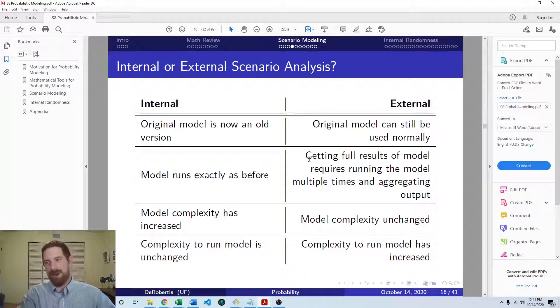Whereas you go with the internal, then what you have before is now an old version of the model. Now you have this new version which has the scenario analysis baked in. And now those two things are inherently entwined and anything else you do with the model is going to be running that scenario analysis as well. And then next is an advantage to internal scenario analysis where you don't have to do anything different about running the model. You just pass in the inputs as you were before, you get the output as you were before, and now it has sensitivity analysis running within it. Whereas with the external, now you're talking about running the model multiple times with each of these different sets of inputs and collecting the output and associating that together. So it becomes a little more complicated to run the model with external scenario analysis.